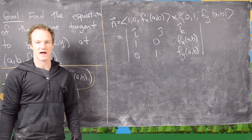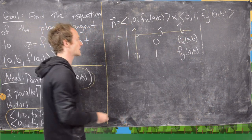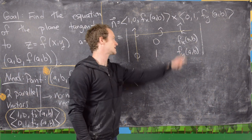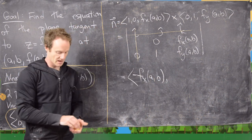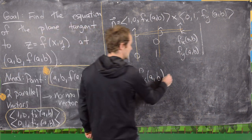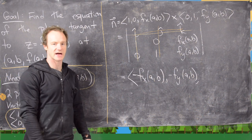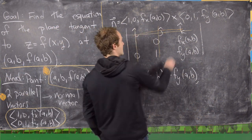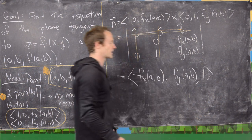Let's compute this cross product. For the i component, we look at the remaining two-by-two determinant: zero times f_y minus one times f_x, giving us negative f sub x of a, b. For the j component, we cross out the second column and get one times f_y minus zero times f_x, but there's a built-in minus sign, giving us negative f sub y of a, b. For the k component, we get the determinant of the identity-like block, which gives us 1.